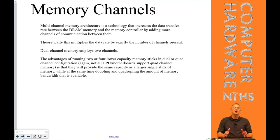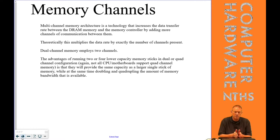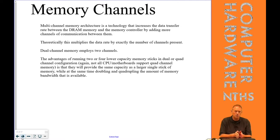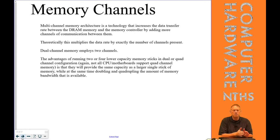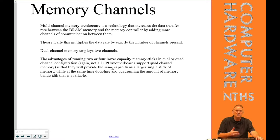To use multi-channel memory, you have to put matching sticks of memory in matching slots. If a motherboard has two slots and supports dual channel, both sticks must be the same. For example, if you're putting in 16GB of RAM, it's better to put in two 8GB sticks in a dual-channel system, because then it can read and write faster than using a single 16GB stick. So it's really the motherboard that uses the memory differently to make the system effectively faster.